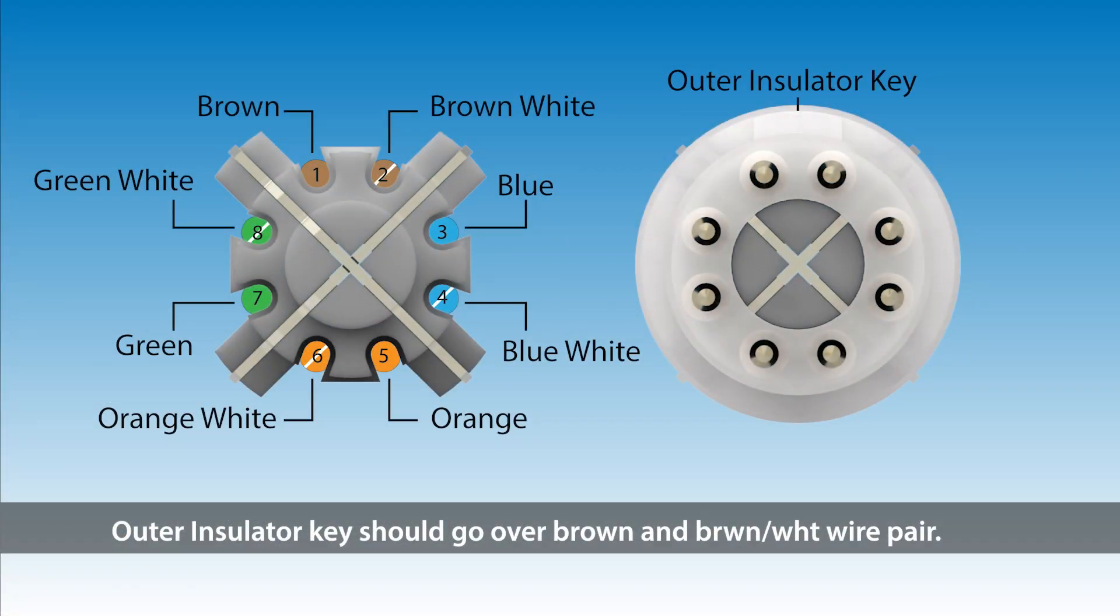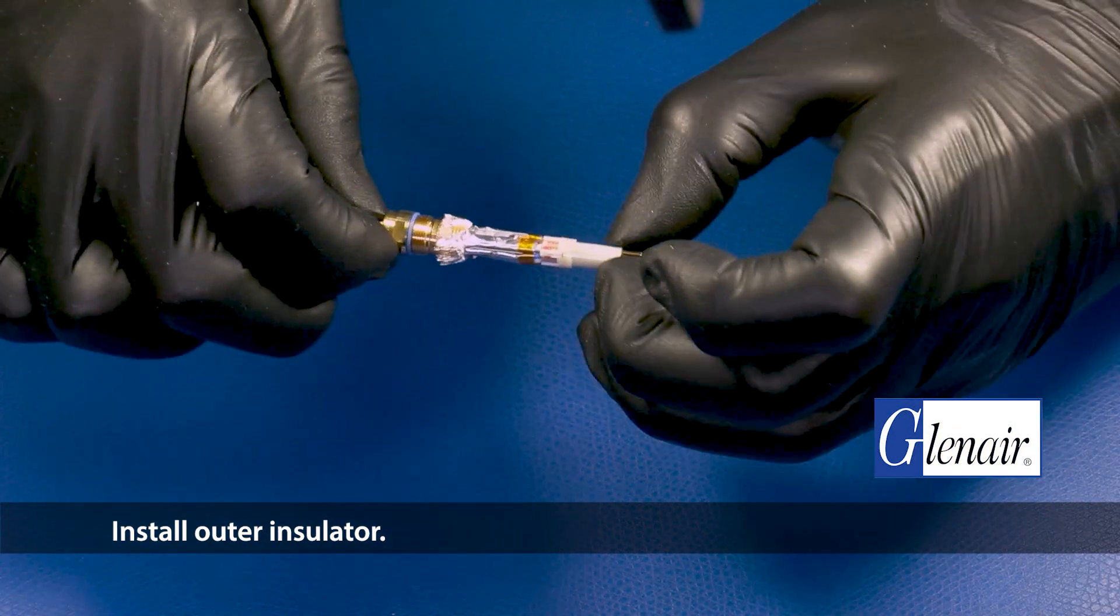Outer insulator key should go over brown and brown-white wire pair. Install outer insulator.